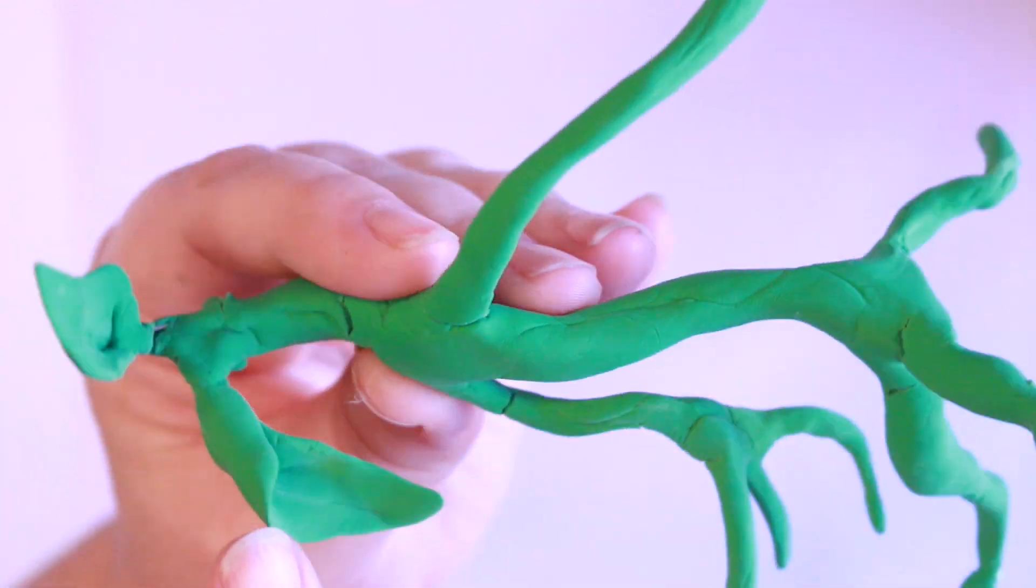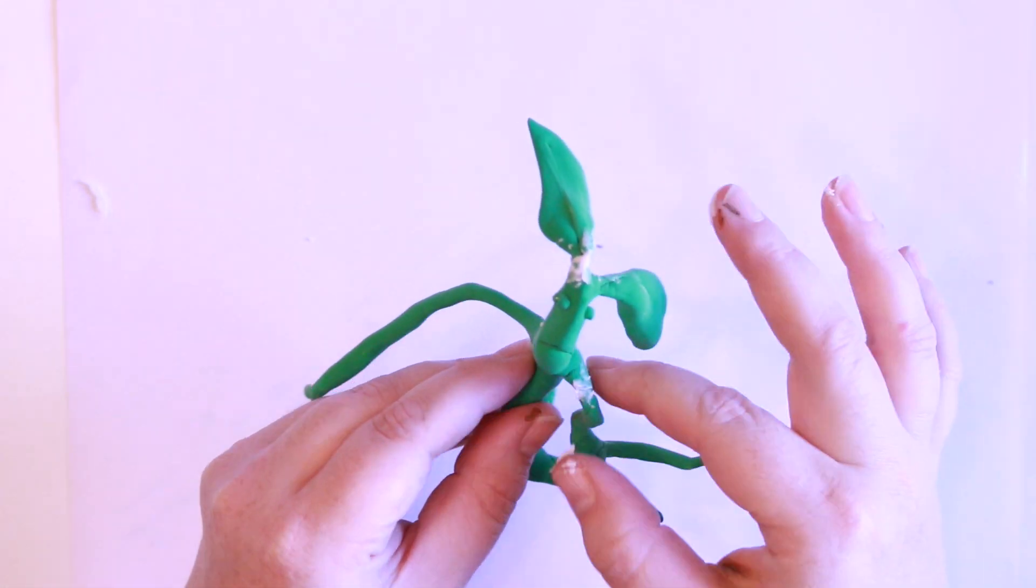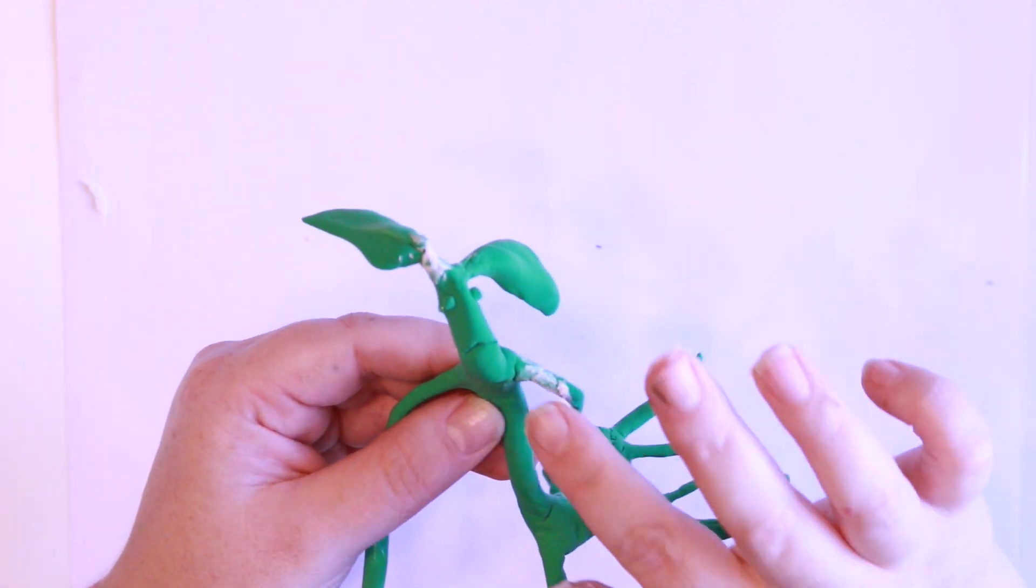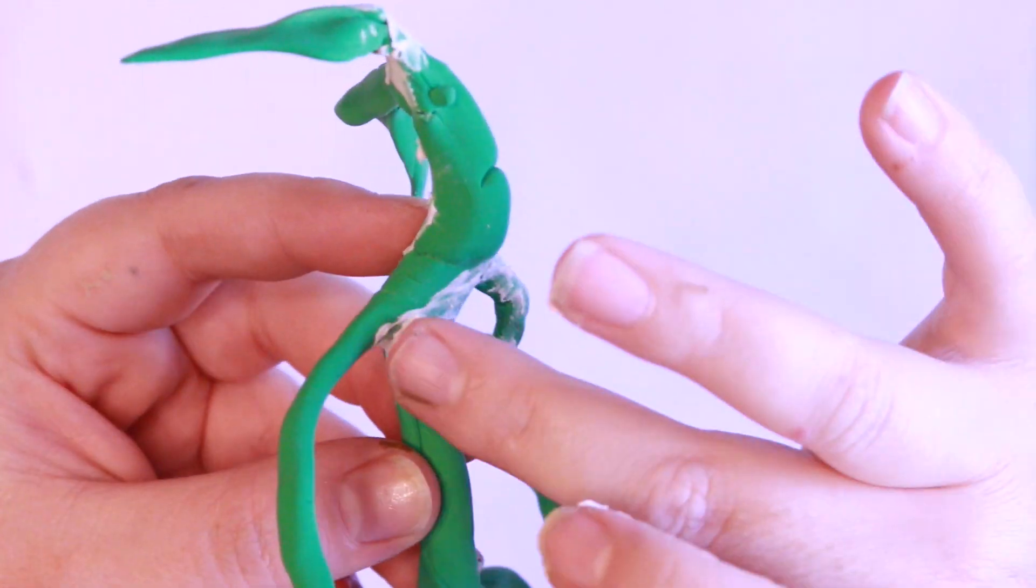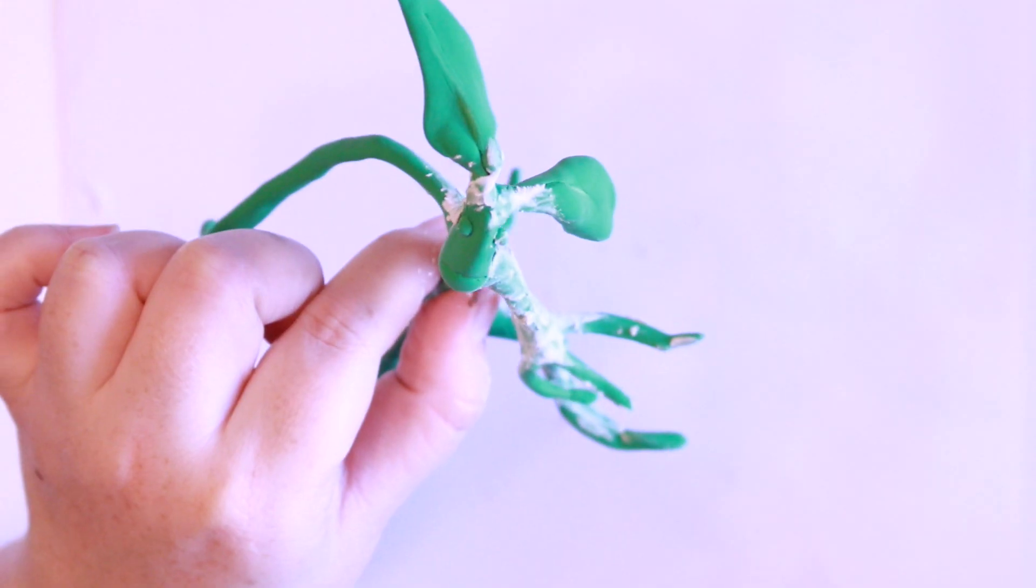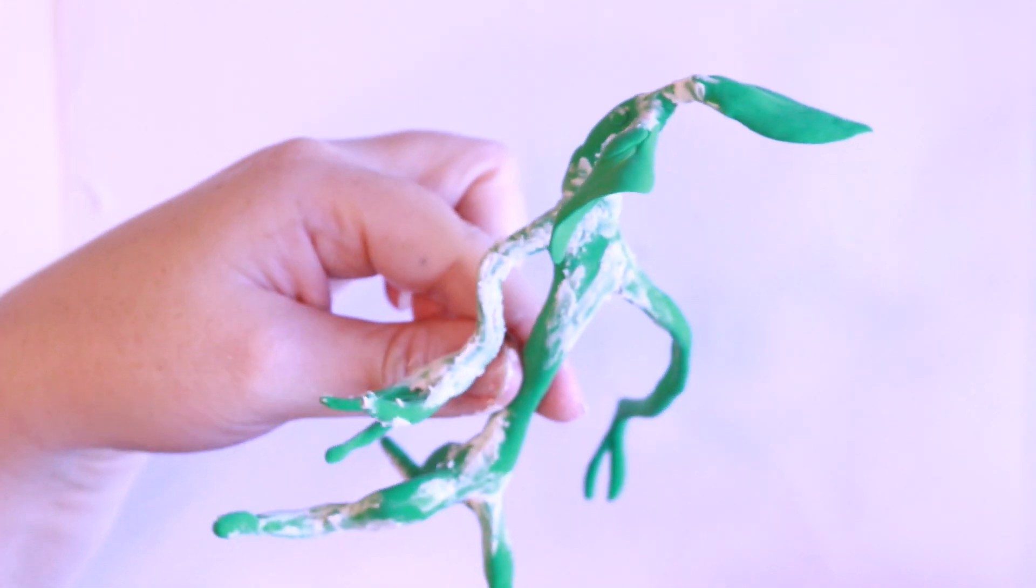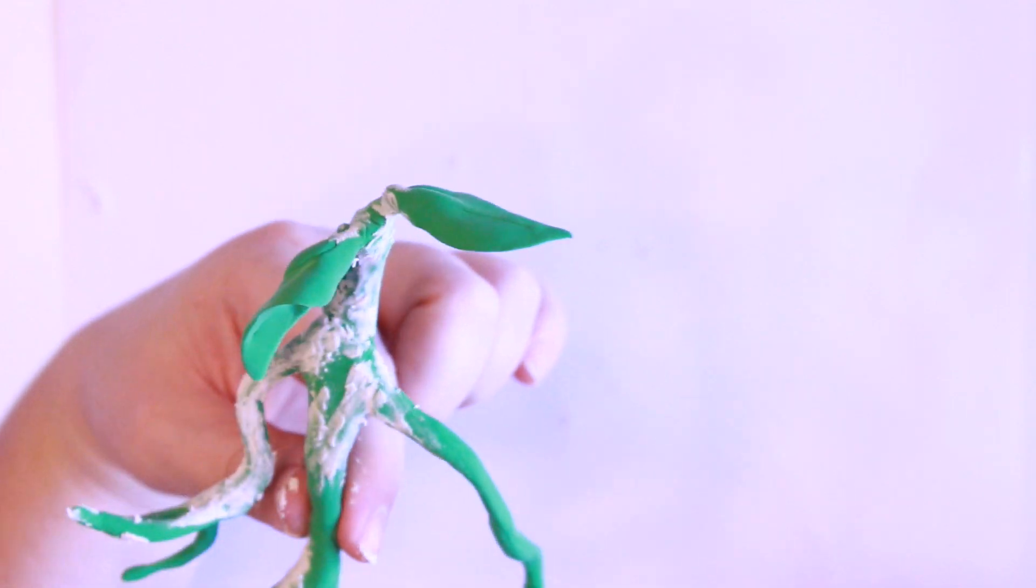And now this is after it's dried. You'll see that Model Magic does have a tendency to crack, especially if it's older. So I just go in with household spackle and cover any cracks that I see. This is just basic household spackle, and then I will actually put Mod Podge on it to seal it.